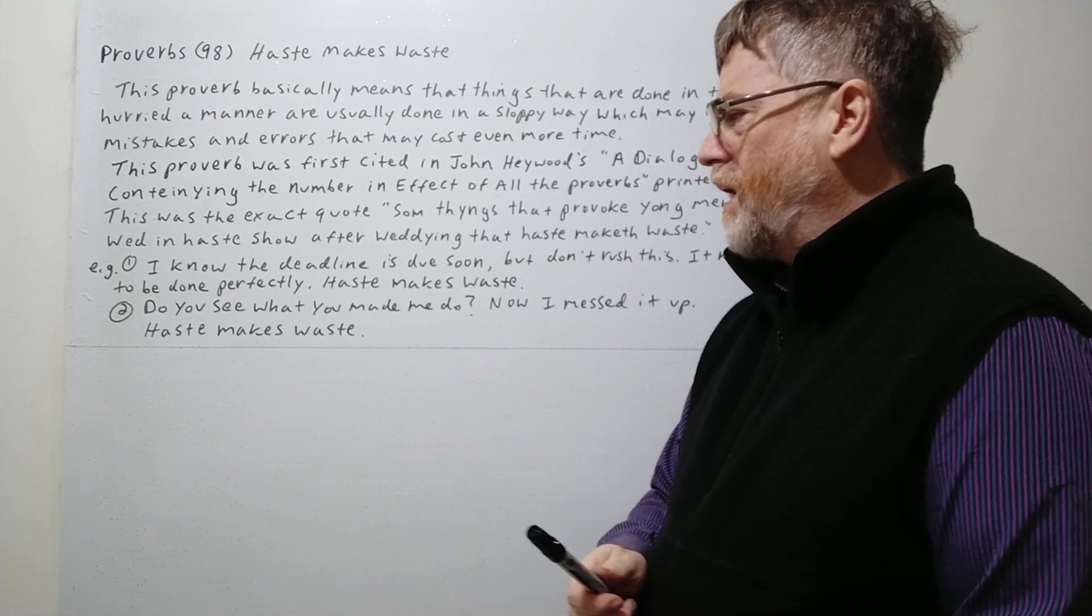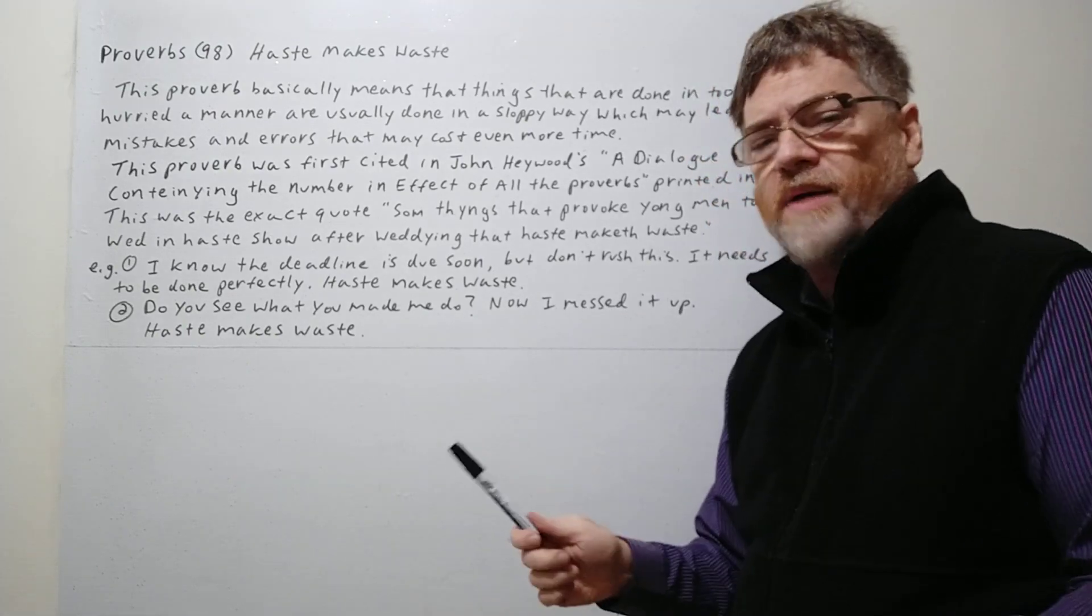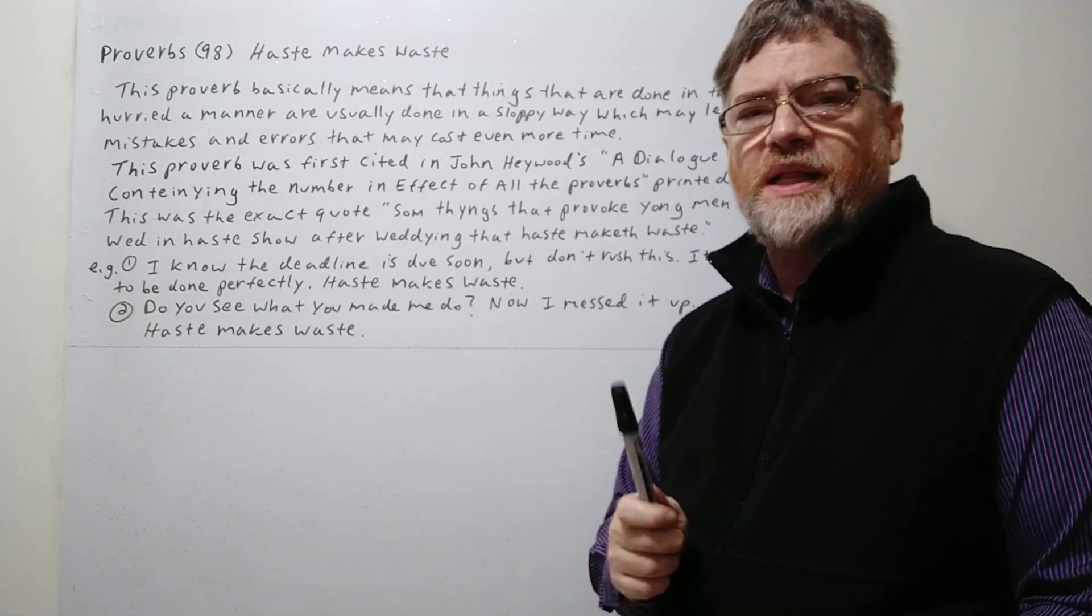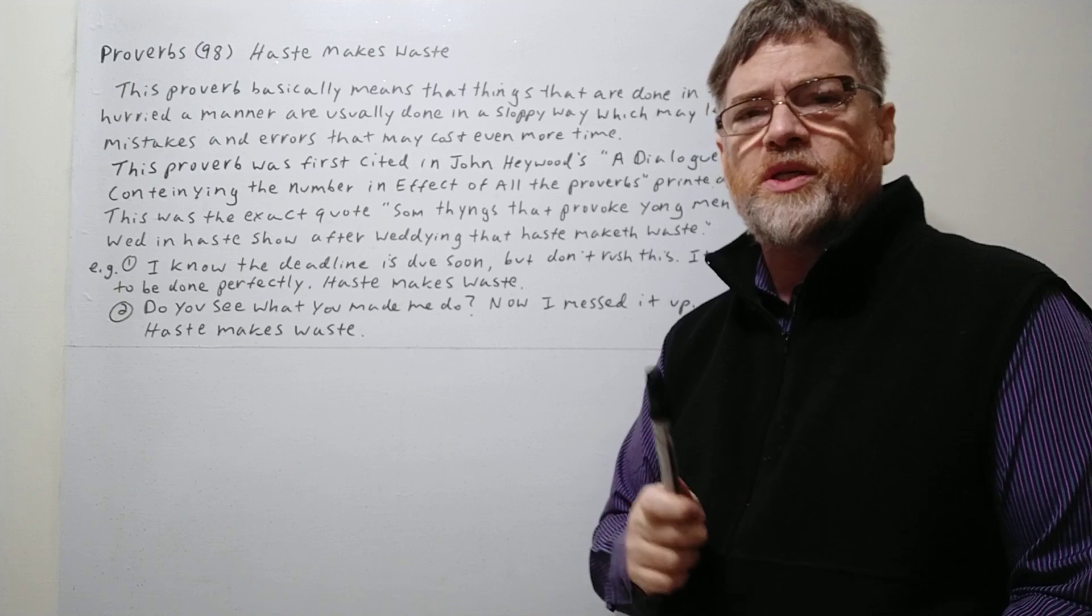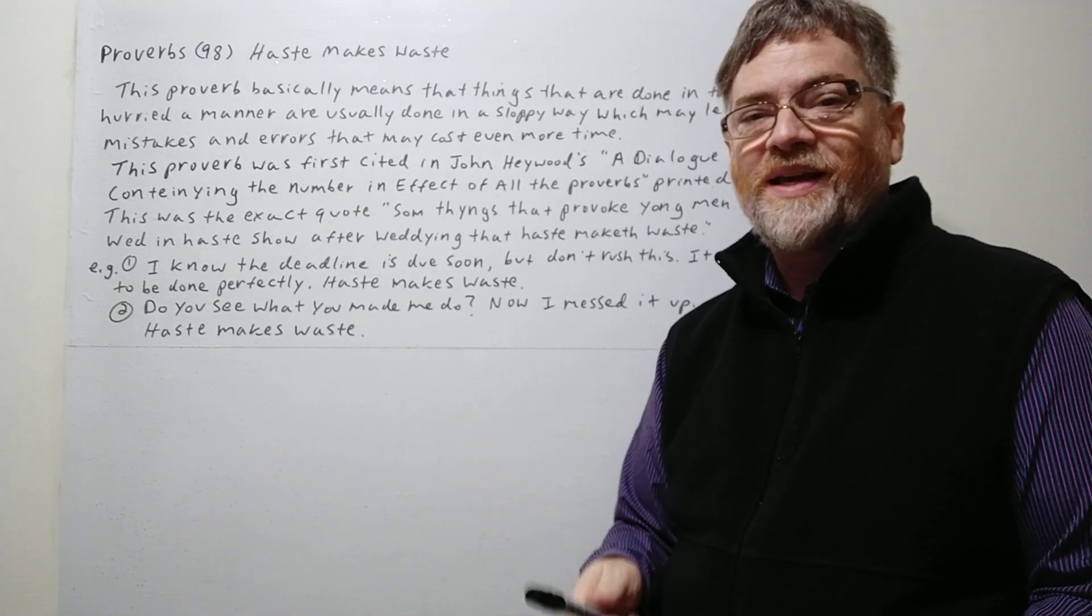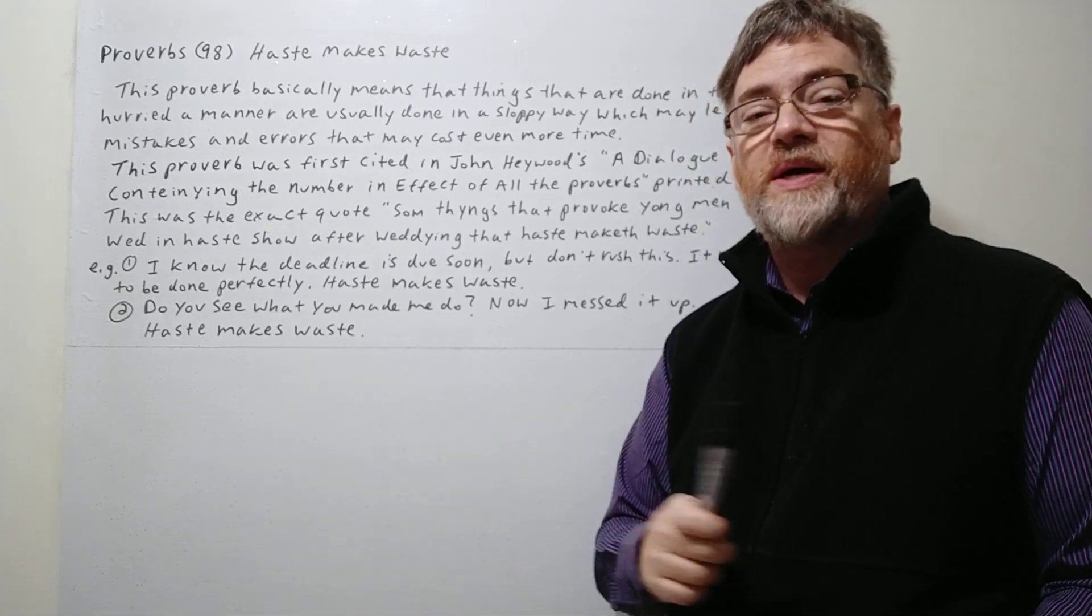Or number two: 'Do you see what you made me do? Now I messed it up. Haste makes waste.' The person's probably complaining, like 'you were rushing me too much, you were pushing me too much, that's why I messed it up.' Kind of blaming the person. But we often use this phrase in a sentence: haste makes waste.